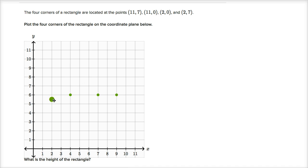And they have these dots, and we can actually move these around for the four corners of our rectangle. So let's look at this first point, (11, 7). Where will that go?